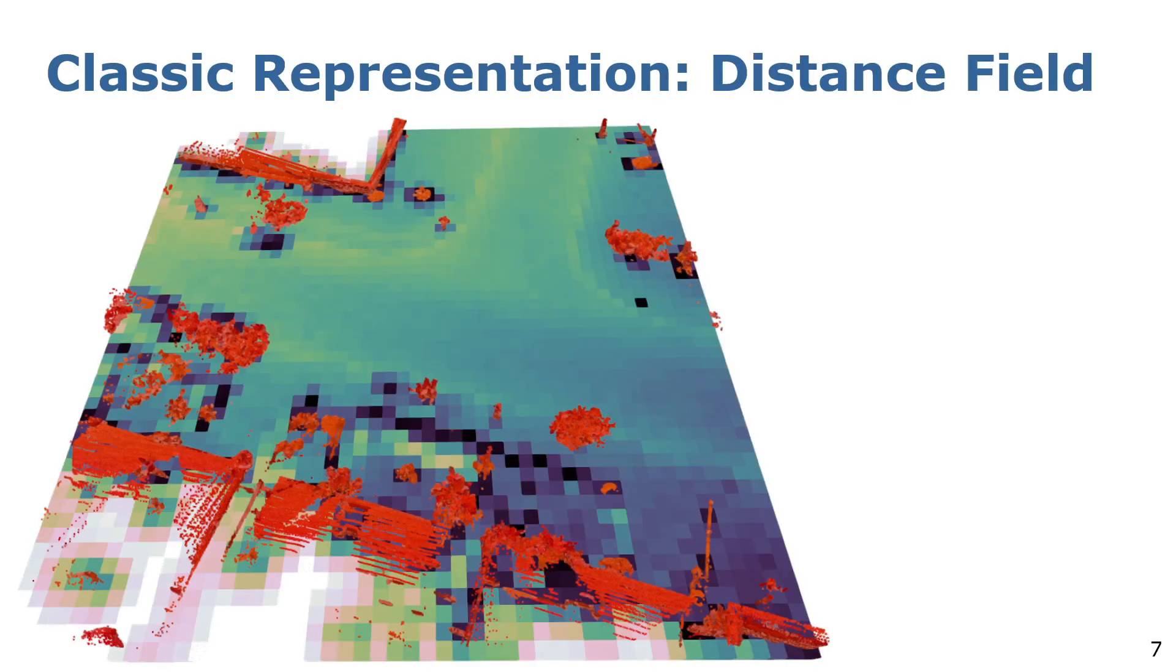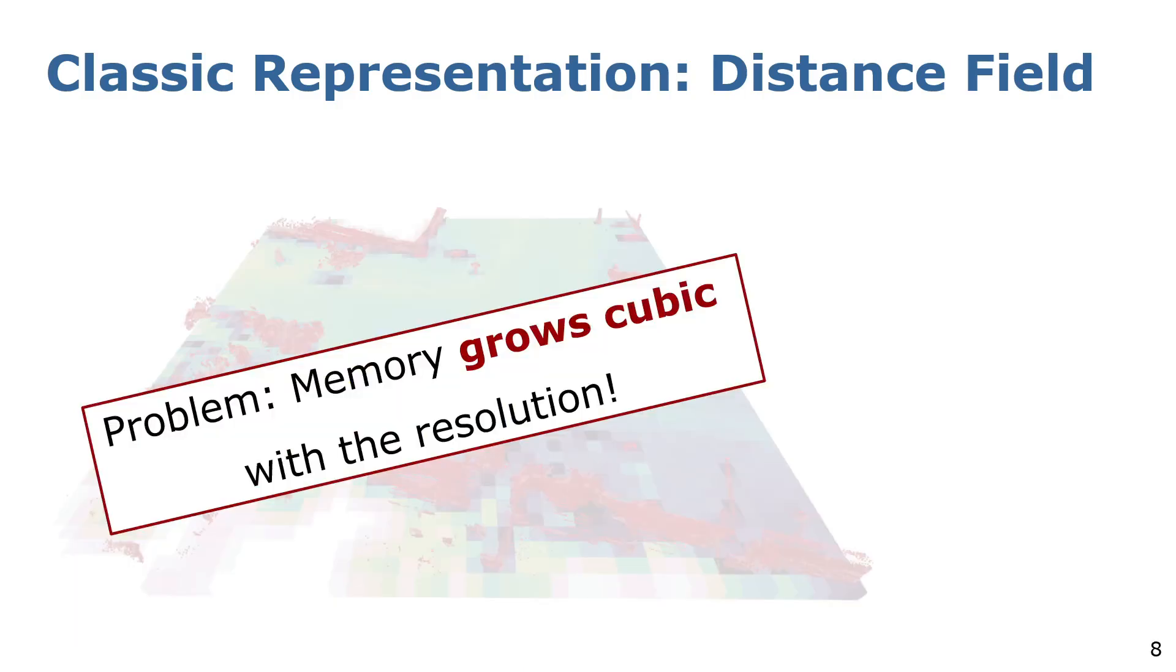Therefore, in the robotic domain, distance fields are more commonly used. The map consists of a grid where each cell stores the distance to the closest surface. The problem is that the memory consumption of those grids grows cubic with increasing resolution. So if we want to have a high resolution model, we need to store a lot of data.